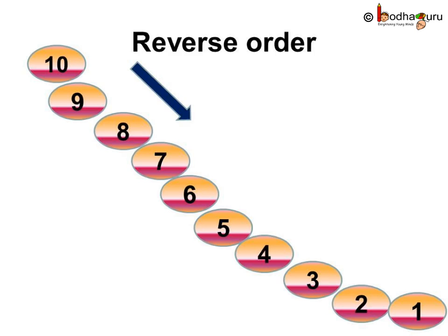So, while coming back, they all used the number stones in the reverse order. The mouse started from 10, then 9. Here, 9 is less than 10. 8 is less than 9. 7 is 1 less than 8. 6 is 1 less than 7. 5 is 1 less than 6. 4 is 1 less than 5. Same way, 3 is 1 less than 4. 2 is 1 less than 3. And, 1 is 1 less than 2.